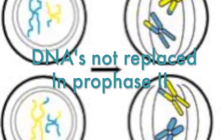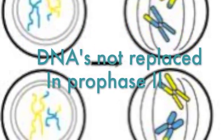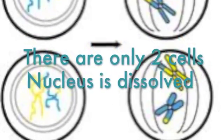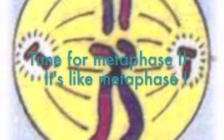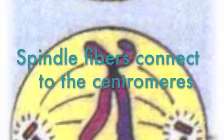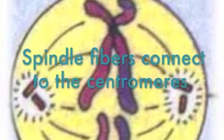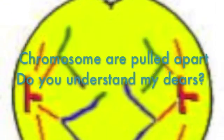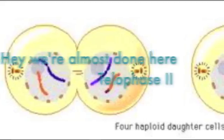DNA is now replicated. In Prophase 2, there are only two cells and the nucleus is dissolved. Time for Metaphase 2 — it's like Metaphase 1. Spindle fibers connect to the centromeres. In Anaphase 2, the chromosomes are pulled apart.